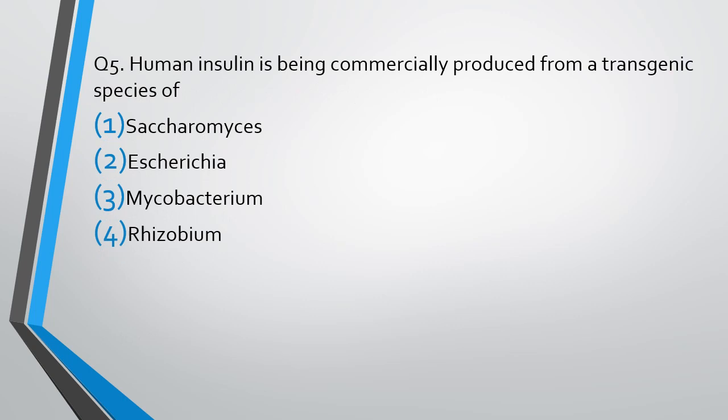Question number 5. Human insulin is being commercially produced by a transgenic species of Saccharomyces, E. coli, Mycobacterium, or Rhizobium. The correct answer is option 2, E. coli. A recombinant species of E. coli is being used to produce human insulin.